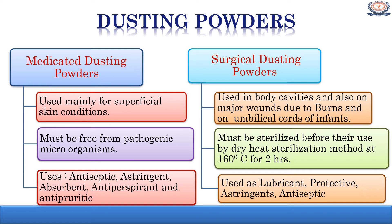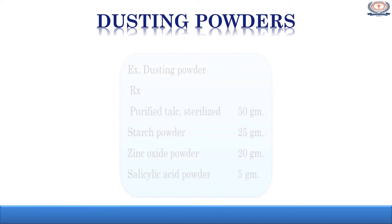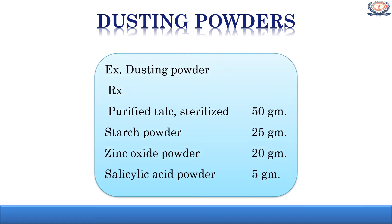Surgical dusting powders are used as lubricant, protective, astringent, and antiseptic. These surgical dusting powders are sterilized by using dry heat sterilization at 160°C for 2 hours. Talc and kaolin are more commonly used because these are chemically inert in nature. Some ingredients are readily contaminated with pathogenic bacteria and must be sterilized by dry heat method — heated at 160°C for 2 hours in an oven. The dusting powders generally contain talc and starch as major ingredients. Zinc oxide can be used as an astringent and salicylic acid is also used in the formulation.